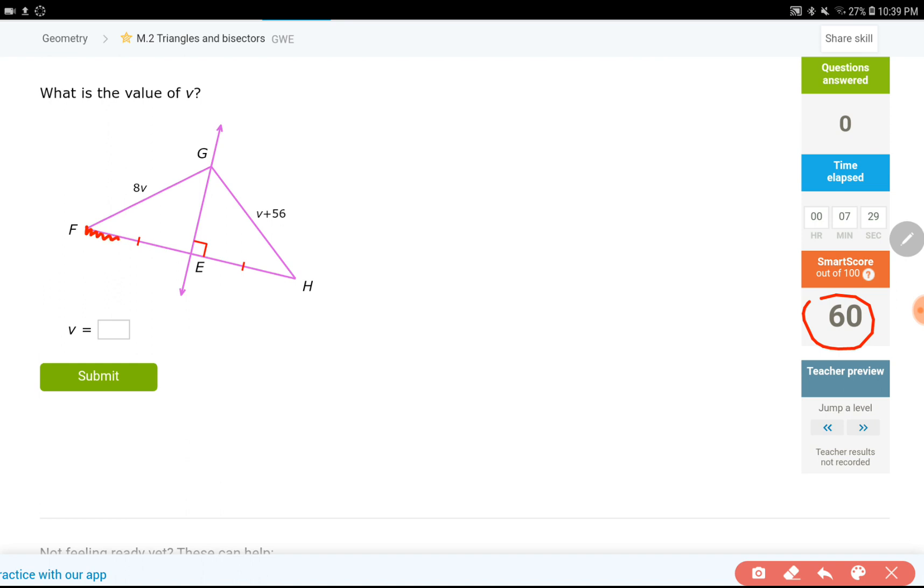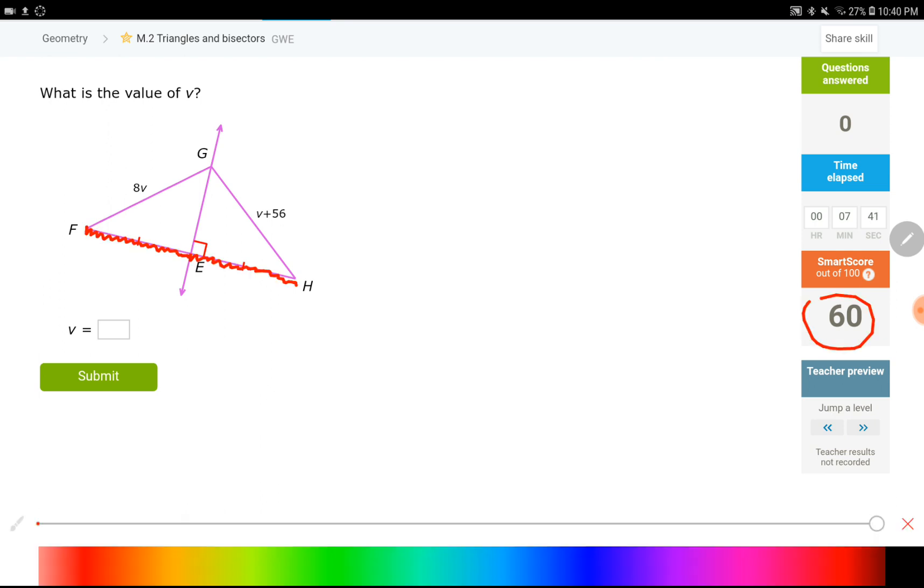FE right here has one tick mark, and EH has one tick mark. This just reminds me that the left side of this triangle could be identical to the right side of the triangle, and it happens if we have a perpendicular bisector. And it looks like we do have a perpendicular bisector because this right here, that guy over here, is 90 degrees, and it cuts the base into equal pieces. If you have 90 degrees, it cuts the base into equal pieces. That's called a perpendicular bisector,